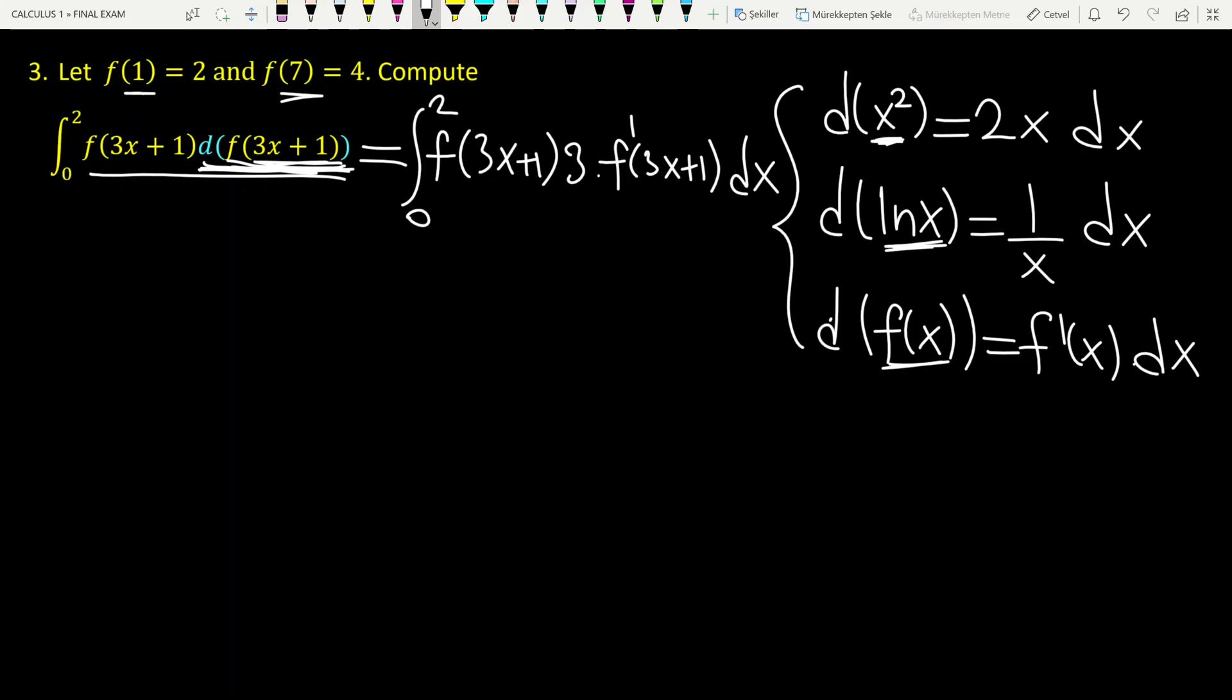Okay, this is all. Now we are ready to use substitution rule to solve this integral problem. So let's say u is equal to f of 3x plus 1. If you differentiate each side, you have du is equal to derivative of f, which is f prime of 3x plus 1, times derivative of inside, 3, and finally dx.